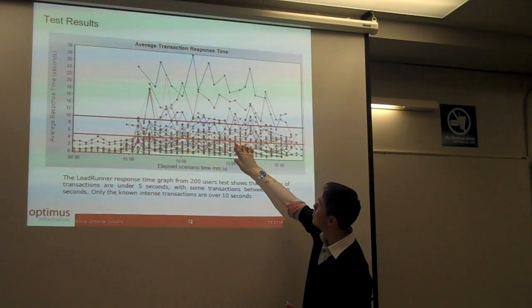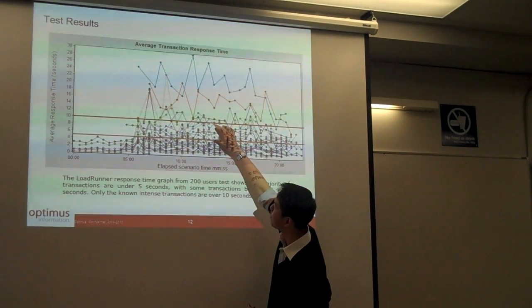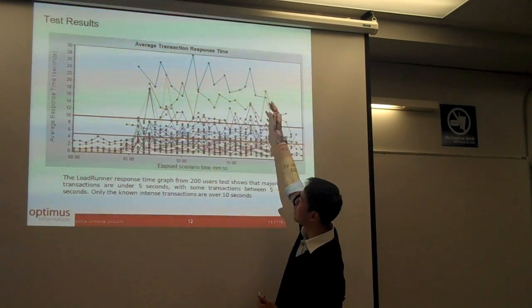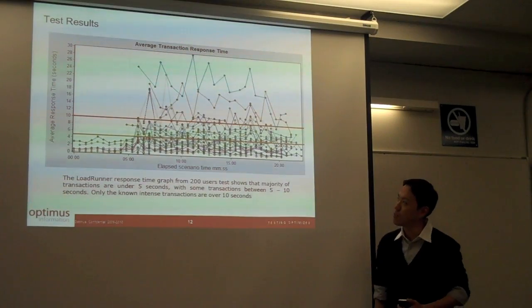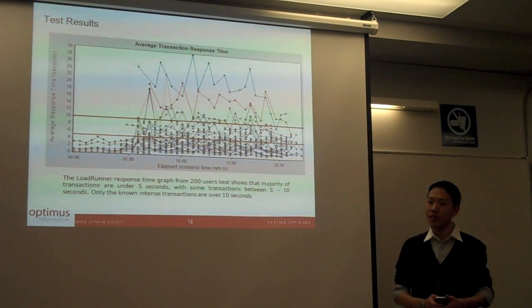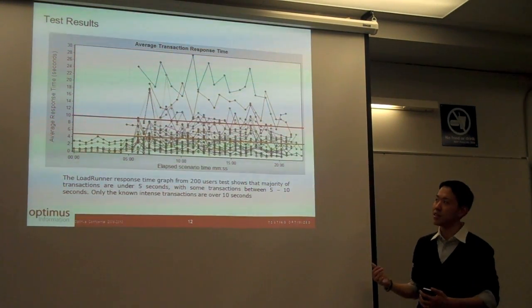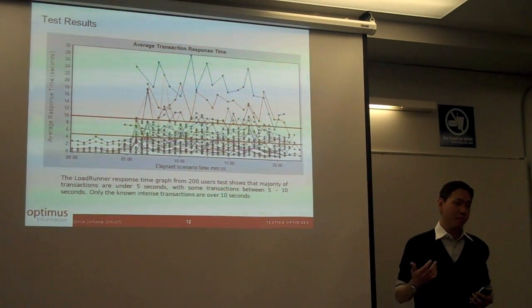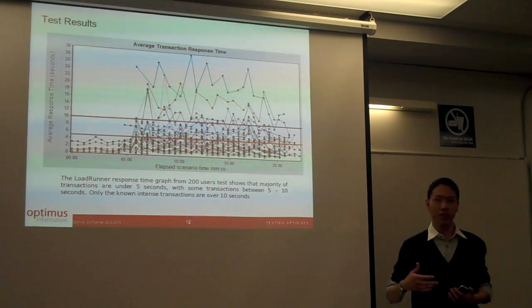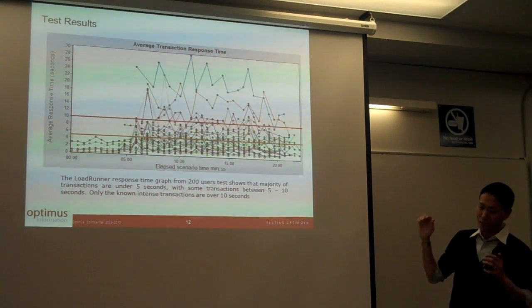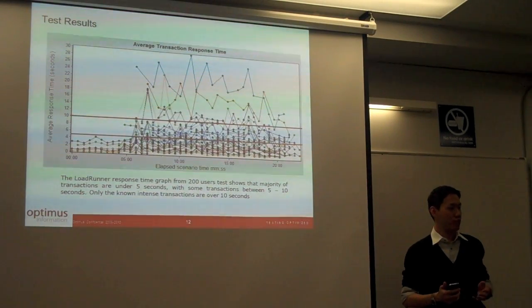Another 30-40% of transactions are between five to ten seconds, and some of the known intensive transactions are always above that. For 200 users it won't meet the acceptance performance criteria anyway, so that means the system will still work but the users will not be happy. They expect everything to be - all the pages, all the actions that they do should come back with a response within 10 seconds. But when you have 200 users on the system doing different things together, some of these transactions are way above 10 seconds, so that means users will not be happy.